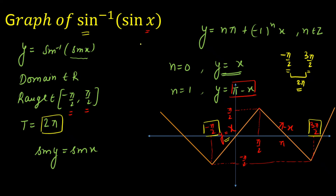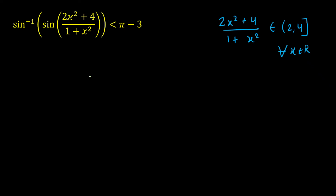In the previous slides we learned how to open sin inverse of sin of any input and how to draw its graph. Our input is (2x² + 4) / (1 + x²). In the first slide I established that this expression varies from (2, 4] for x ∈ R. Now, using the graph I will determine which branch to use. I will go directly to the graph without repeating the basics.